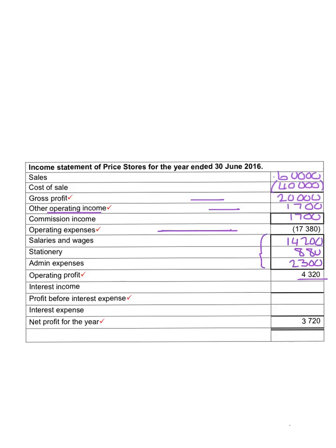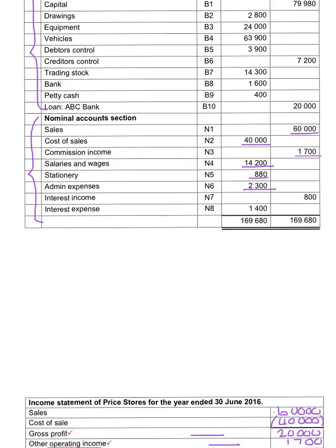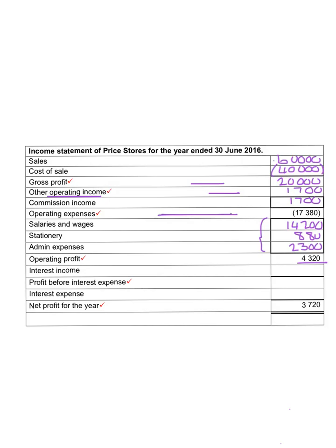After we calculated the operating profit, we will take into account the interest income and interest expense. The interest income is $800 and the interest expense is $1,400. The interest income is added to the operating profit, so that will give us $5,120. The interest expense must be deducted because it will reduce the profit, and then we determine the net profit for the year as $3,720.